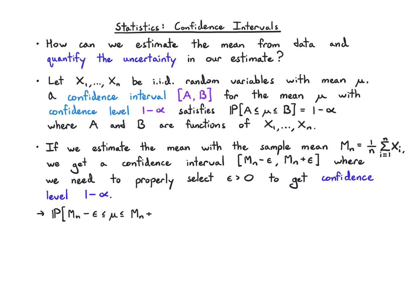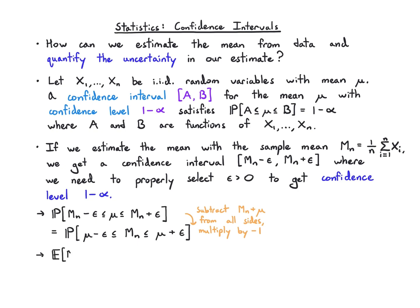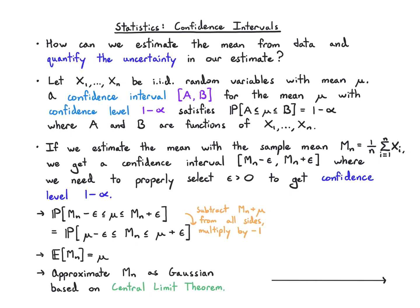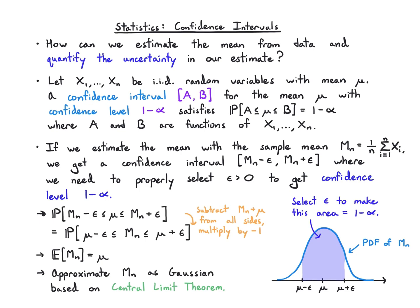The probability that the confidence interval mn minus epsilon through mn plus epsilon captures mu can be rewritten by subtracting mn plus mu from both sides and multiplying through by minus 1. What we're really asking about is the probability that the sample mean lies between mu minus epsilon and mu plus epsilon — basically, what's the probability that the sample mean is within epsilon of its true mean? We approximate its probability distribution as Gaussian based on the central limit theorem.